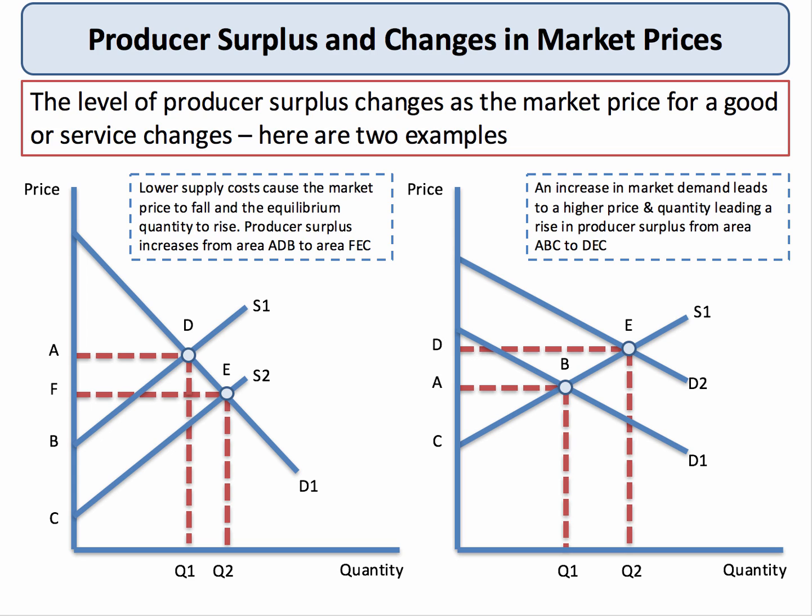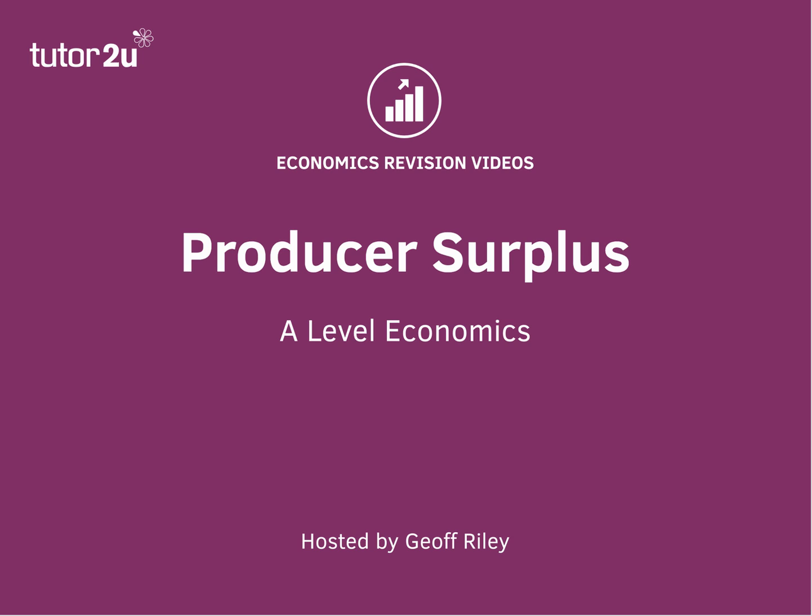The increase in producer surplus is shown by the area D, E, B, A. An outward shift of demand is good news for producers — they can sell more at a better price. So there we go. You'll be using producer surplus in lots of essays in A-level economics, and lots of multiple choice questions. Expect to see producer surplus making an appearance. Hopefully this short video has helped cement your understanding.